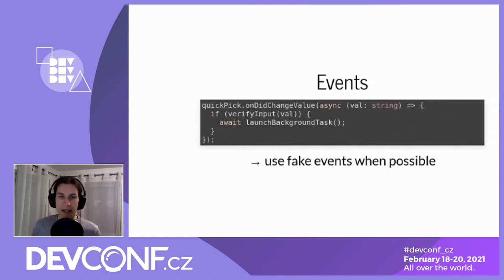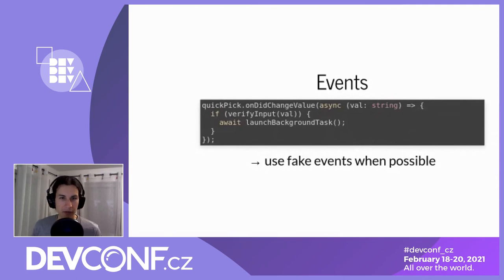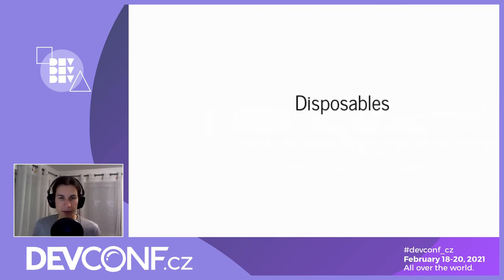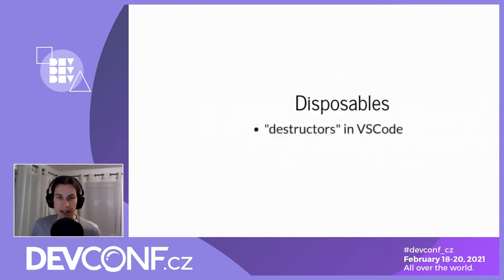My recommendation is to implement some fake events yourself - this is really straightforward. If you want to see how this is done, steal my implementation from the Open Build Service Connector; it will be linked on one of the last slides.